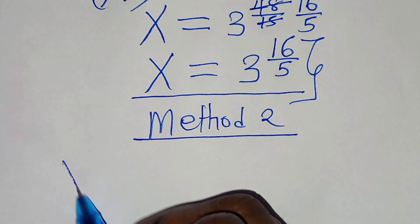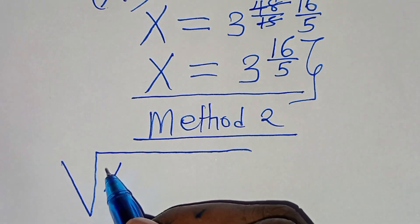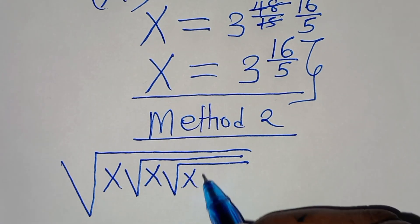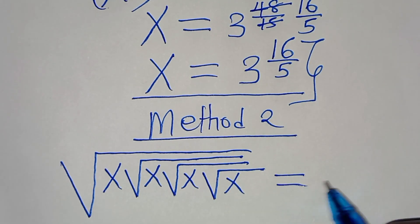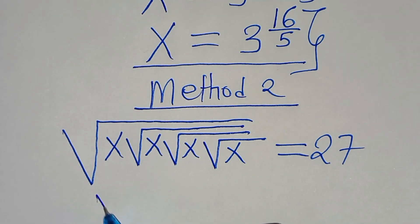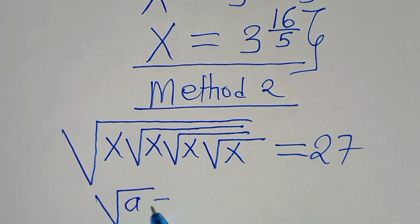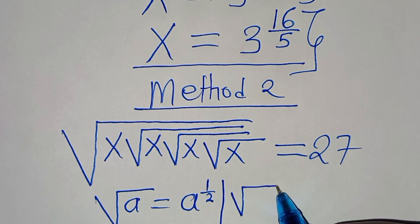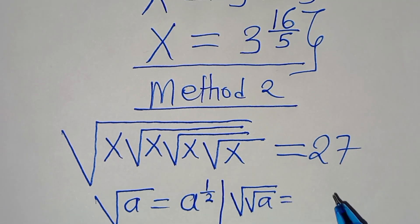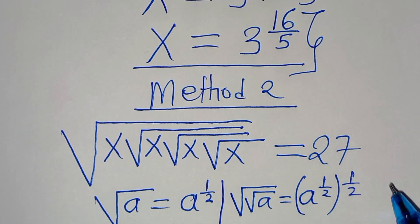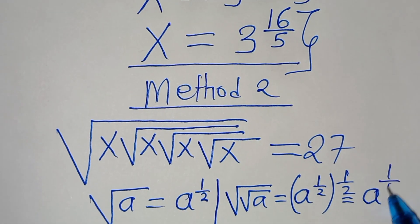For Method 2, we have the square root of x multiplied by nested square roots of x. We use the property that the square root of a equals a to the power of one half. The double square root of a can be expressed as a to the power of one half, raised to the power of one half, which equals a to the power of one quarter.